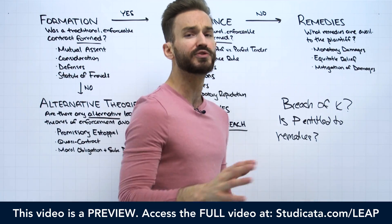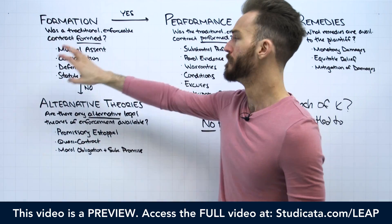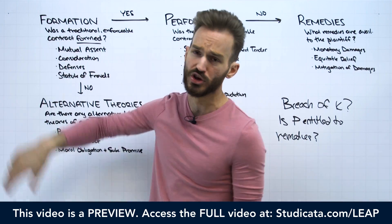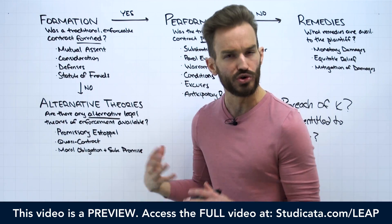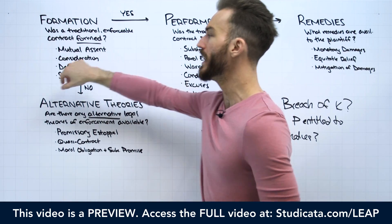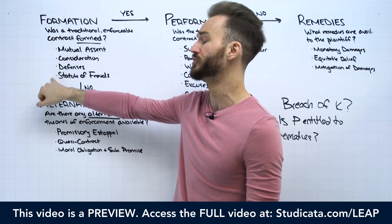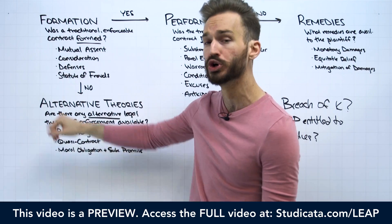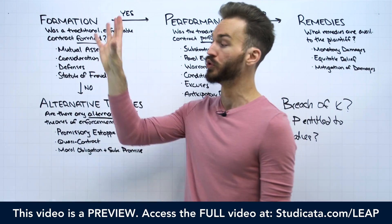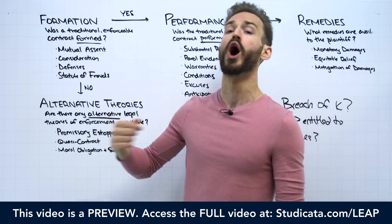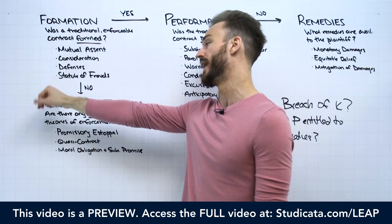The last thing I'll leave you with here is some issue spotting checklist stuff — quick mnemonics and acronyms, and this will be in the handout below. I like to use cat-based acronyms. For formation, the big four issues are mutual assent, consideration, defenses to formation, and the statute of frauds. I use the acronym 'My Cats Do Sneak.' So if you identify a formation issue on your contract law fact pattern, you always want to run through that acronym — My Cats Do Sneak: mutual assent, consideration, defenses, and statute of frauds.